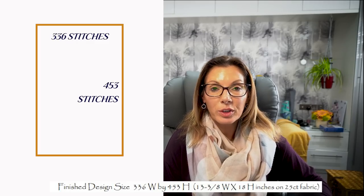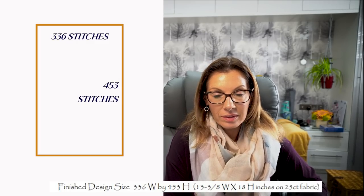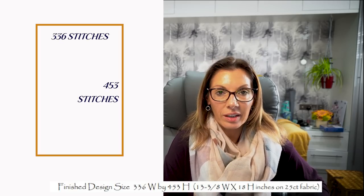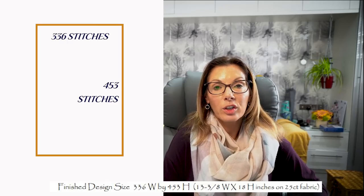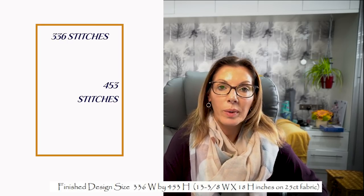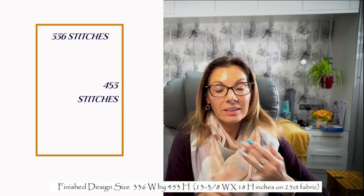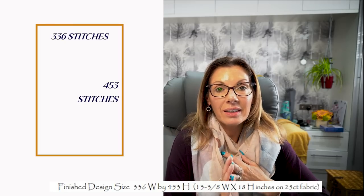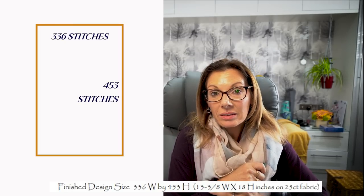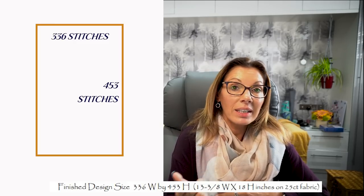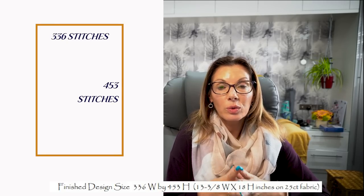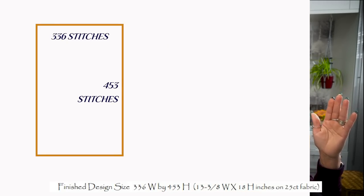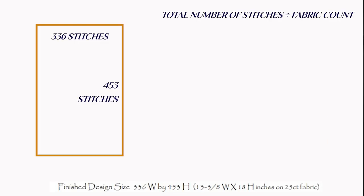Here's where the super easy maths comes in. To get the size of the stitched area, you take your total number of stitches and divide them by your fabric count. Whether that's a 14 count Aida, 16 count, 18 count, 20 count, 22 count, 25 count even weave, 28 count even weave, 32 count even weave — all you do is take your total number of stitches on your width and divide by that number. I told you it's really easy!